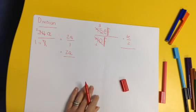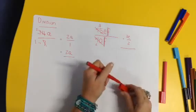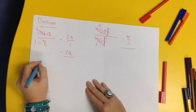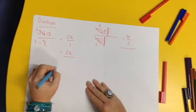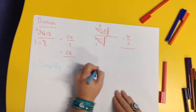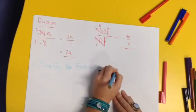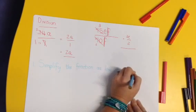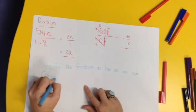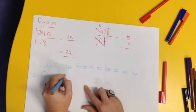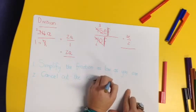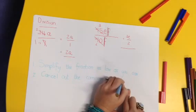So if we're going to write steps in your notes, I want you to just say, let me use another color. Okay, I want you to say, simplify the fraction as low as you can. Okay, right. And then cancel out the common variables. So remember we did that there with the f and the f. Cancel out the common variables. And that's it.